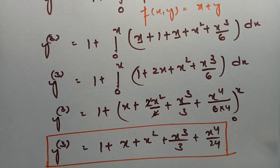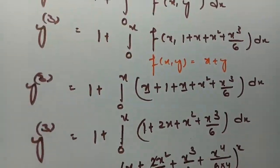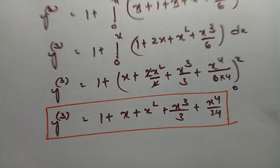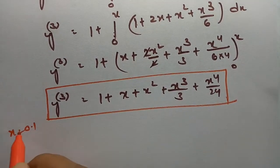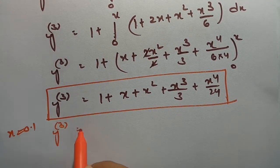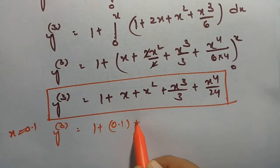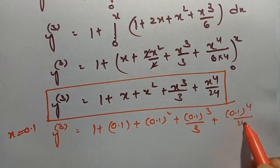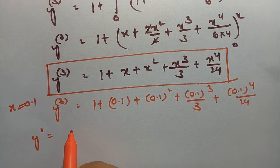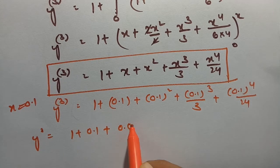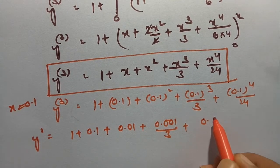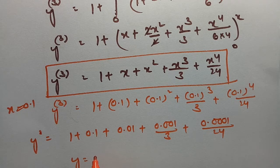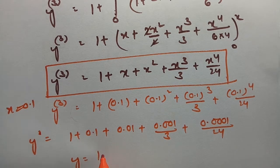If you go with the fourth approximation it will be very tedious, so we stop at the third. Now we calculate the values of y for x = 0.1 and x = 0.2. Substituting x = 0.1: y = 1 + 0.1 + (0.1)²/2 + (0.1)³/3 + (0.1)⁴/24 = 1 + 0.1 + 0.01/2 + 0.001/3 + 0.0001/24. The value works out to y ≈ 1.1103.